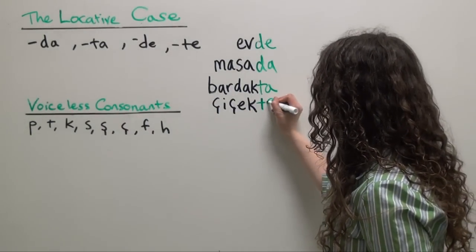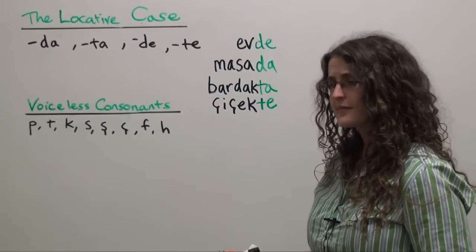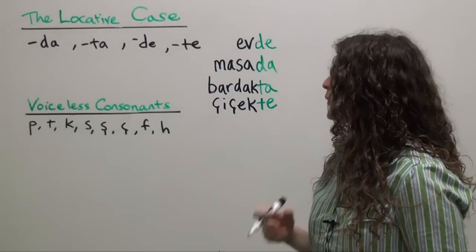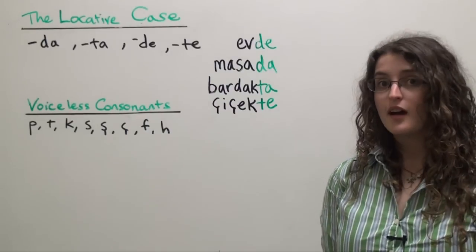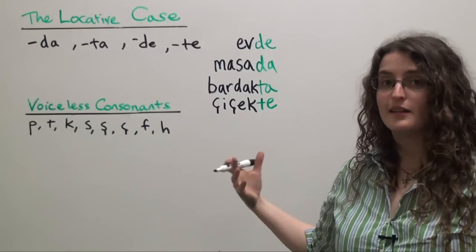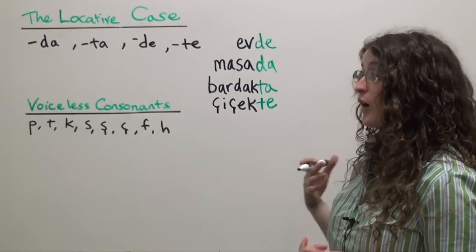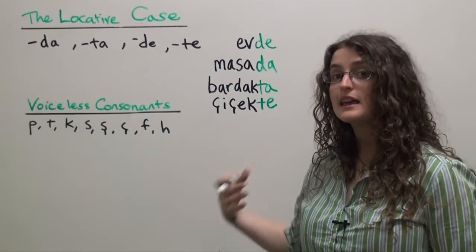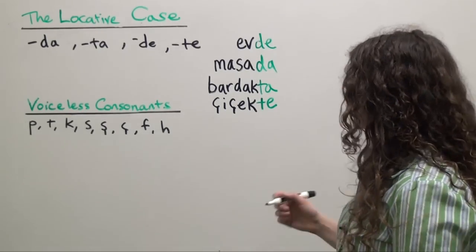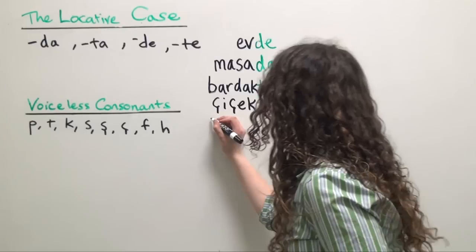Çiçekte, on the flower. That's pretty simple. Now we can also add the locative case ending to a proper noun, like the name of a person, like if you want to say on Bill or something, and to the name of a city. For example, if you want to say in Istanbul, I'm going to start with the Turkish word İstanbul.